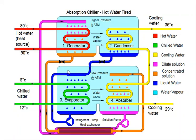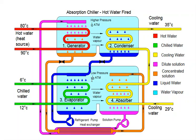The third compartment is the evaporator. At very low pressure, the water is dropped here and gains heat from a coil coming from the production floor, building, or any area that requires cooling. The coil enters at higher temperature and leaves at lower temperature. The water gains heat, becomes vapor, and moves toward the absorber.